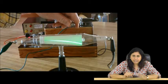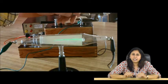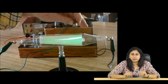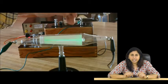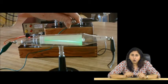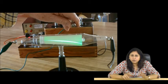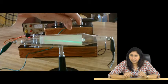These cathode rays were discovered in 1870 by William Crookes. Later, in 1879, he suggested that these rays consisted of streams of fast-moving negatively charged particles.